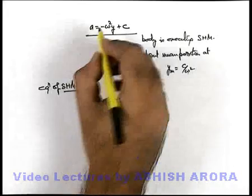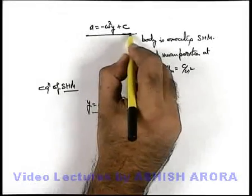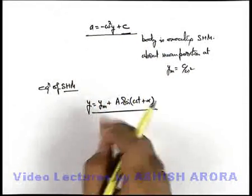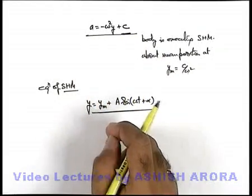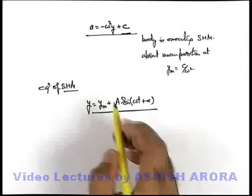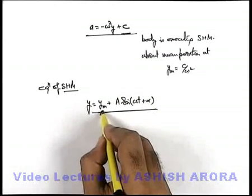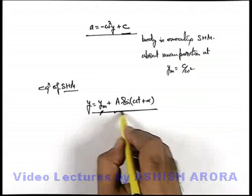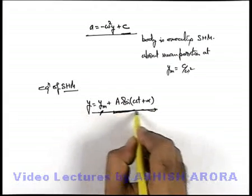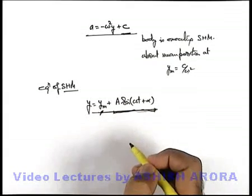As we have discussed, whenever a constant term appears in the acceleration expression, it denotes that a constant force is also acting on the body. Due to the constant force, only the equilibrium position or mean position is shifted; the oscillating behavior of the body remains the same.